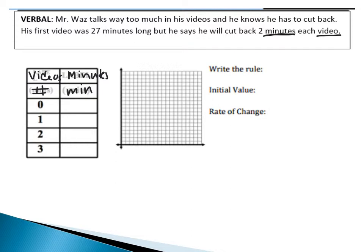So zero videos, one, two, and three. For each video, what's changing is the number of minutes. So I'm going to put that in my table with units of minutes. When I have zero videos, that's where I start — my initial value is going to be 27 minutes. That's my first video ever made. Now, every video that I make after that, I'm going to eliminate two minutes, taking me down to 25, then 23, and then 21.